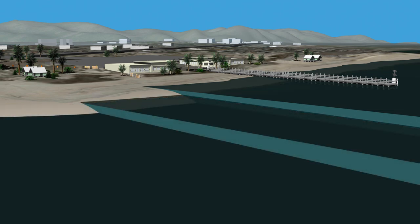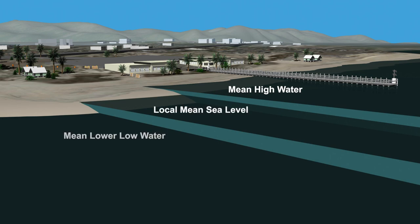Common tidal datums include mean high water, mean sea level, and mean lower low water. They are used by federal and state agencies as well as private companies for a range of purposes.